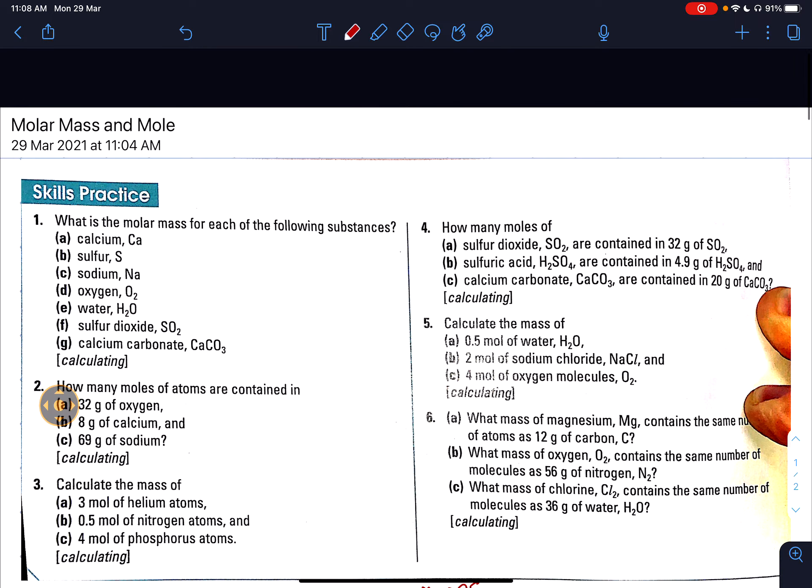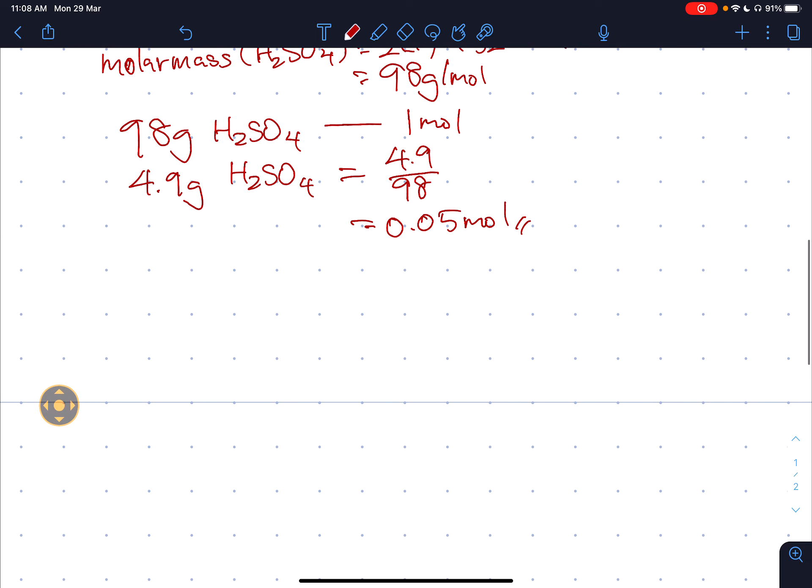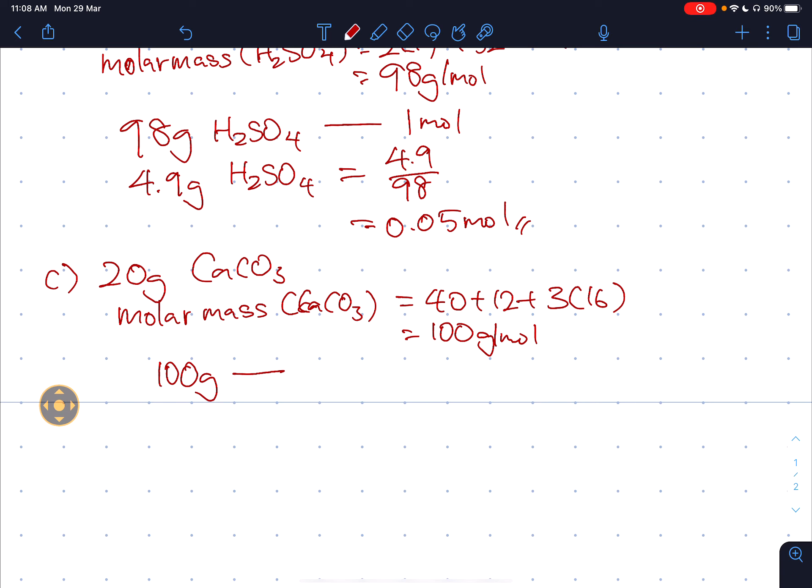Okay, now what other questions are there? Question c: calcium carbonate CaCO3, 20 grams. So question c, 20 grams of CaCO3. You know the drill. First molar mass CaCO3, so from periodic table will get 40 plus 12 plus 3 times 16. So if you calculate that, this should be 100 grams per mole. So 100 grams is equivalent to 1 mole. So now I got 20 grams equals 20 divided by 100, 0.2 moles.